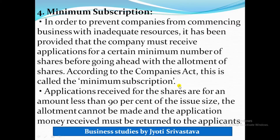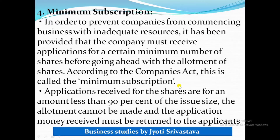The company will return the excess 50,000 shares' worth of money to the applicants on the basis of shares applied. Each of the 10 investors had applied for 10,000 shares, so since only 5,000 shares can be allotted to each, the company will return 5,000 shares' worth of money to each investor. So 5,000 multiplied by 10 investors equals 50,000 shares' worth returned in total. This whole situation where more shares are applied for than offered is known as over subscription.